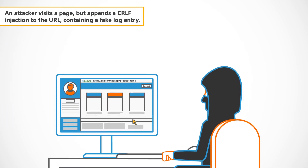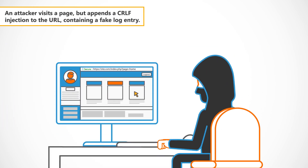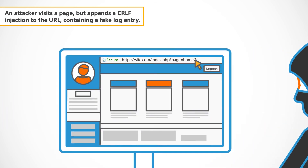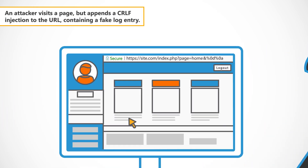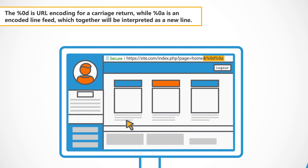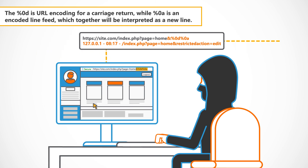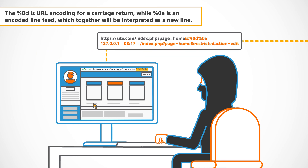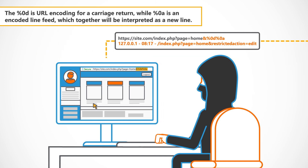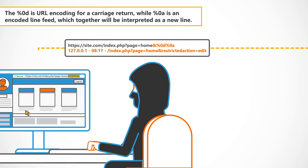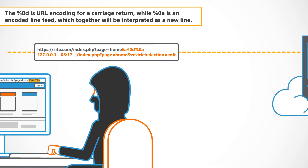An attacker visits a page but appends a CRLF injection to the URL containing a fake log entry. The %0D is URL encoding for a carriage return, while %0A is an encoded line feed, which together will be interpreted as a new line.